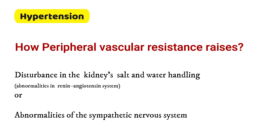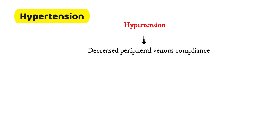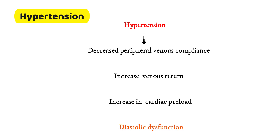In the kidneys, abnormalities in salt and water handling, the renin-angiotensin system, or the sympathetic nervous system play an important role in increasing peripheral vascular resistance. Hypertension is also associated with decreased peripheral venous compliance, which results in increased venous return, increased cardiac preload, and ultimately causes diastolic dysfunction.